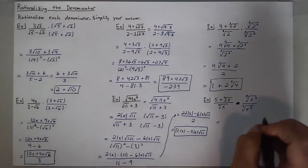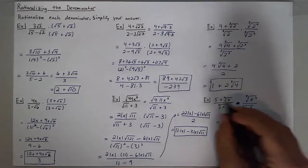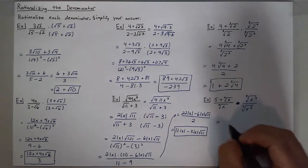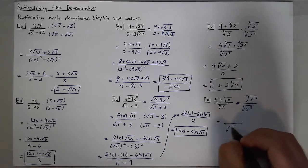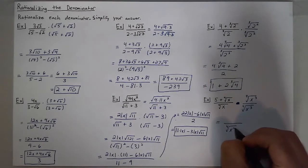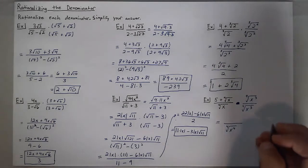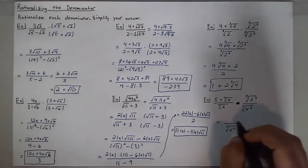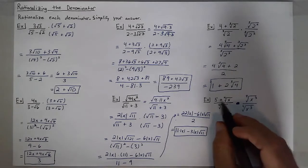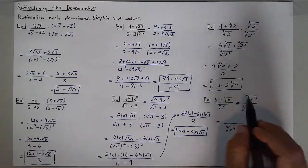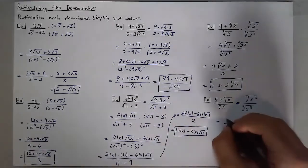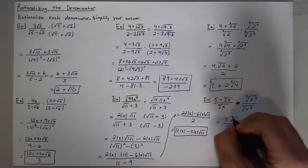Now I'll have in my denominator the fourth root of x to the fourth, which is a perfect fourth power. And in my numerator, I'll have 5 times the fourth root of x to the third.